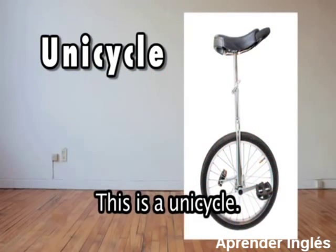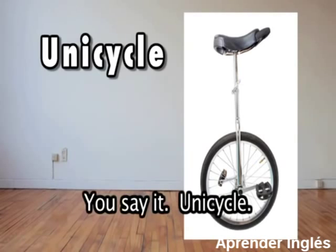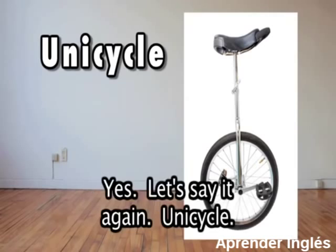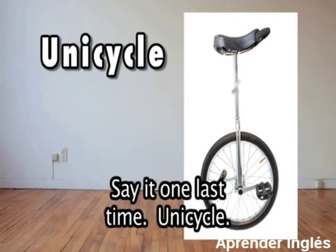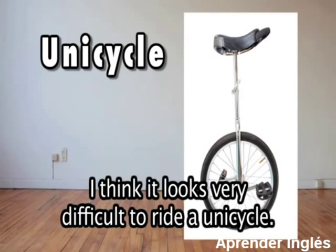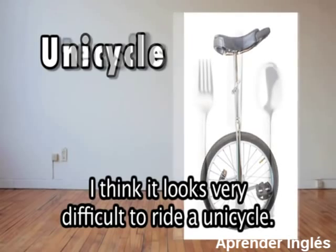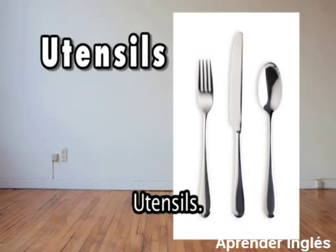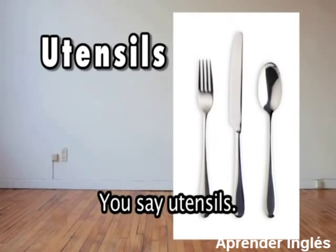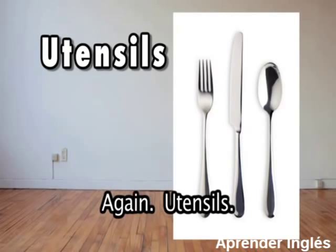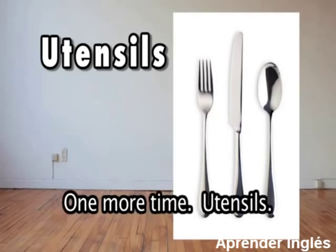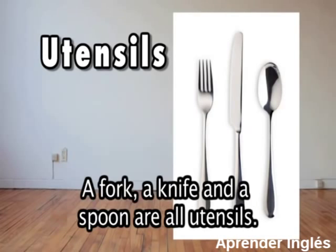This is a unicycle. Unicycle. You say it: unicycle. Yes, let's say it again: unicycle. Say it one last time: unicycle. Right. I think it looks very difficult to ride a unicycle. These are utensils. Utensils. You say utensils. Again, utensils. One more time, utensils. Yes, that's right. A fork, a knife, and a spoon are all utensils.